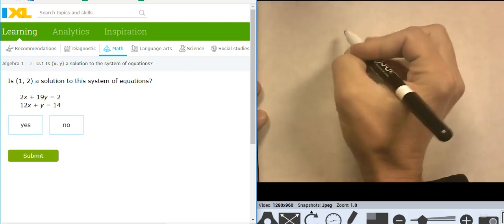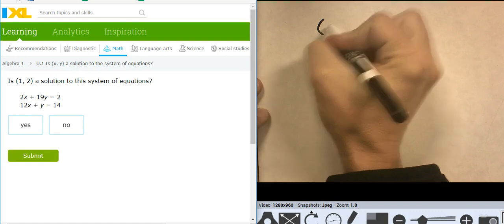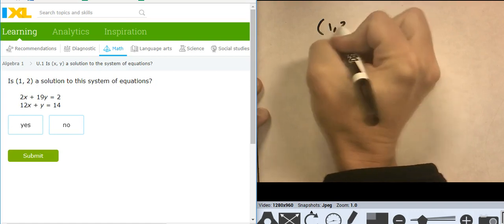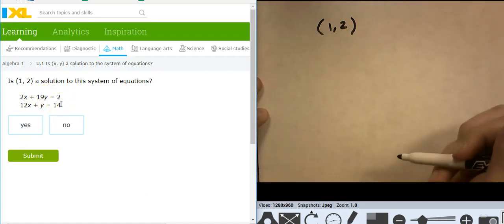So what we're looking at right now is I have this point, and it's point (1, 2), and I want to know if it's a solution to this system over here. Well, what does it mean to be a solution? It means that if I plug it in, it will work. If it's a solution to a system, it has to work in both equations.